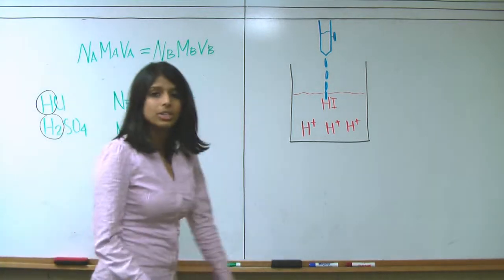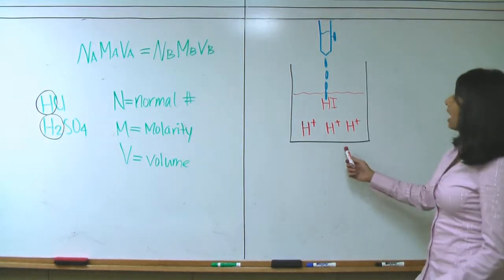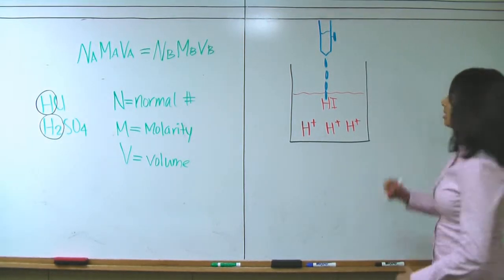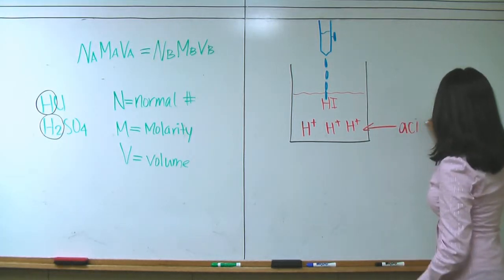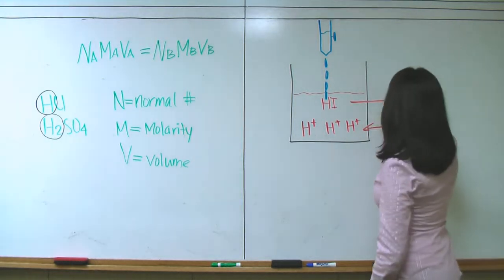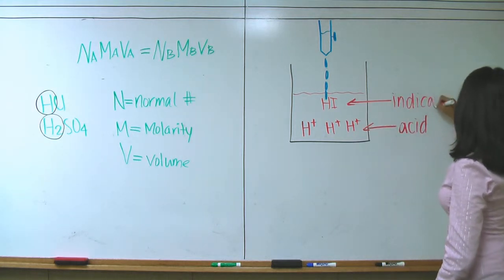Now, how do we do titration in labs? We take a beaker full of acid and indicator. So here we have our protons flying around, which is our acid. And the indicator we're going to use today is HI. This is not to be confused with the strong acid HI.